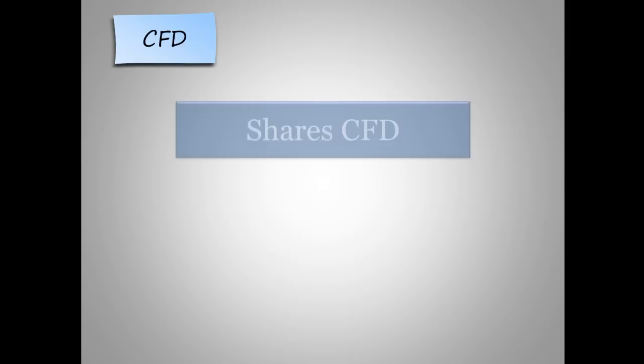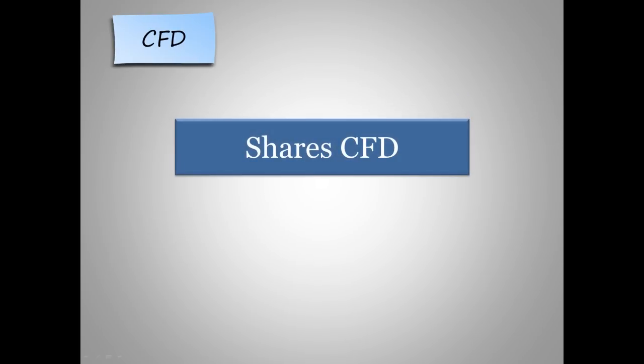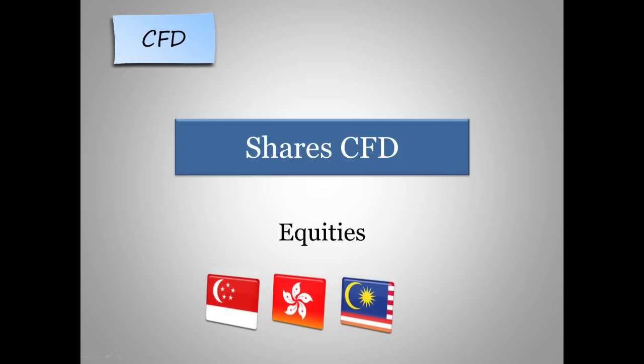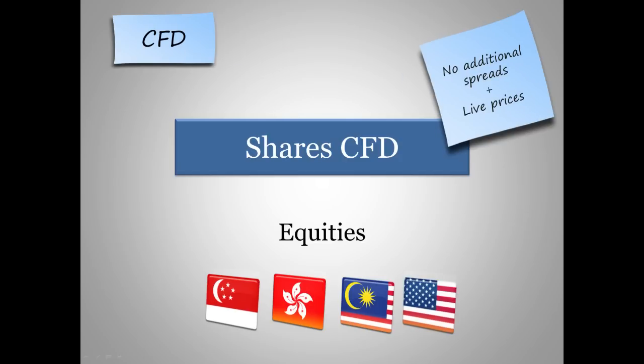Under the CFD product, there are generally two types of CFDs offered by Philips Securities. The first is Share CFD. Share CFDs consist of equities which are tradable across different markets, and these include Singapore, Hong Kong, Malaysia and US. Prices listed are all reflective of the live prices available on the exchange, with no additional spreads in the prices you will see on our platforms.